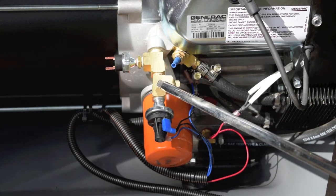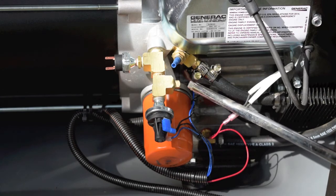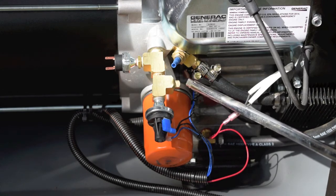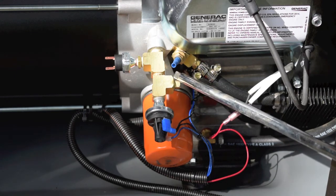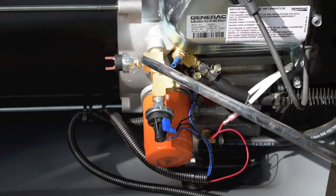This street elbow here, the oil pressure line is going to go in where this plug is and then go to the gauge that's going to be mounted in the battery end. This street elbow here, that's an oil sending unit and it's normally open.